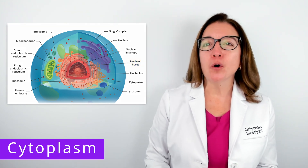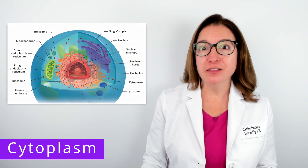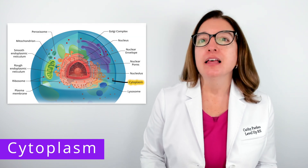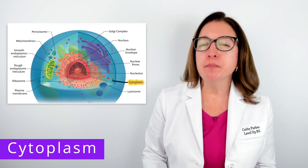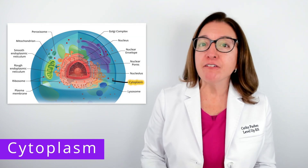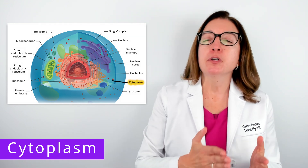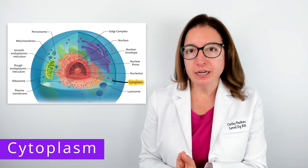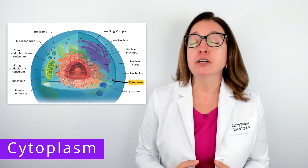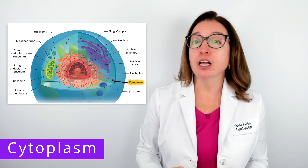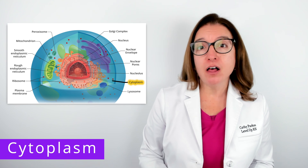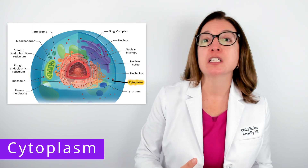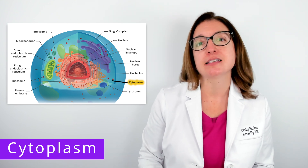Let's now work our way outside the nucleus, where we will find the cytoplasm. The cytoplasm is basically everything between the nuclear envelope and the plasma membrane. This includes a gel-like substance called cytosol, as well as the structures suspended in the cytosol.